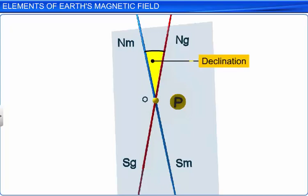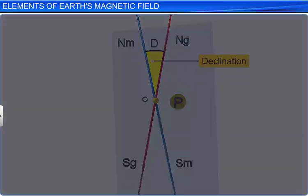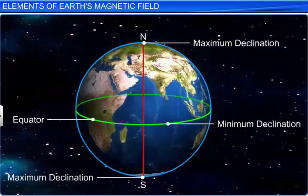It is denoted by the capital letter D. Declination changes from place to place on Earth. Declination is minimal at the equator and goes on increasing with latitude.